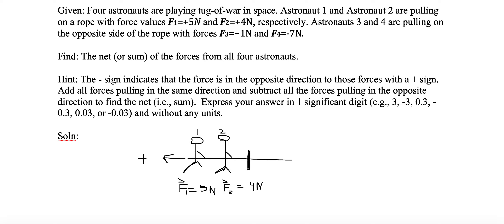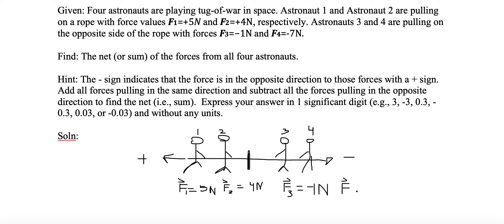Now let's add astronaut 3 and astronaut 4 on the other side of the rope, pulling in the opposite direction. F3 is minus 1 newton, going in the negative direction — to the right. Then we have F4 as our last force. Notice I'm putting an arrow above the F since I can't draw a bold letter, indicating it's a vector and we need to state the direction.